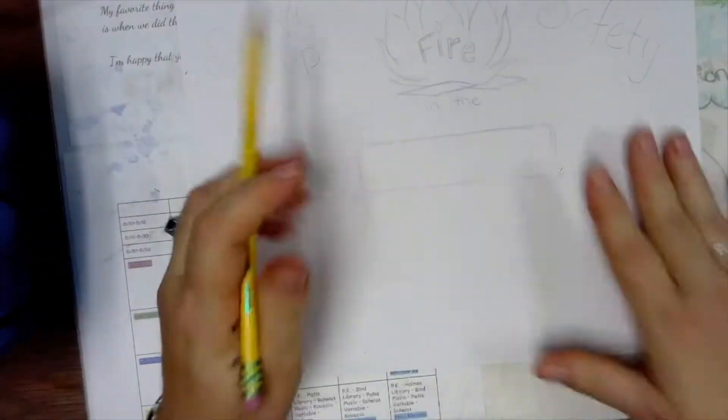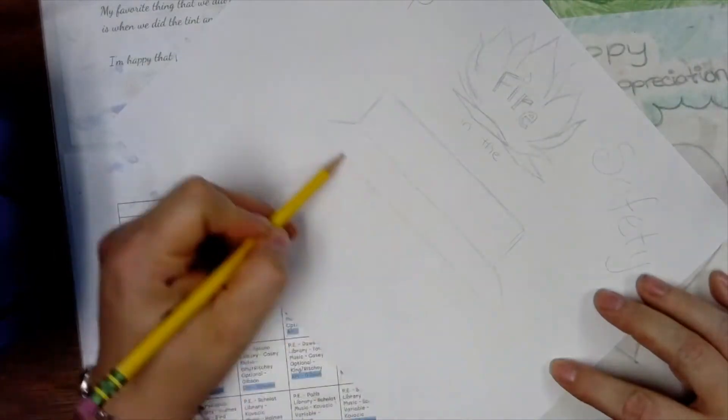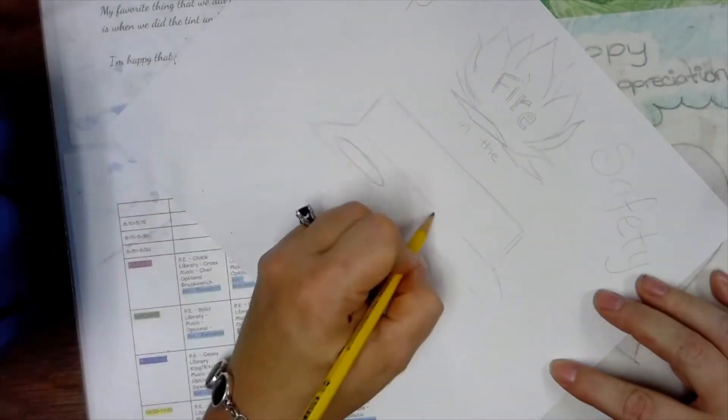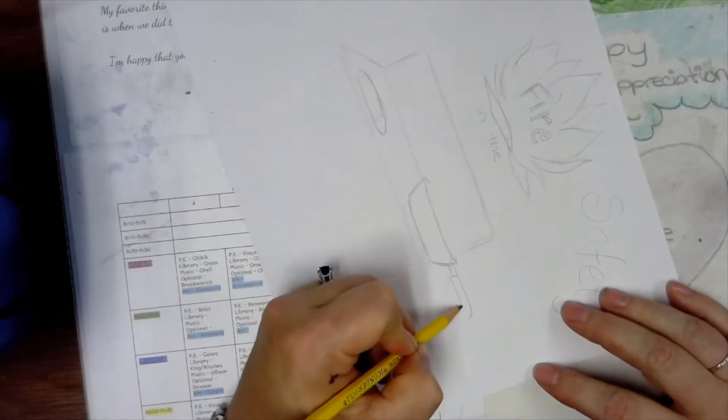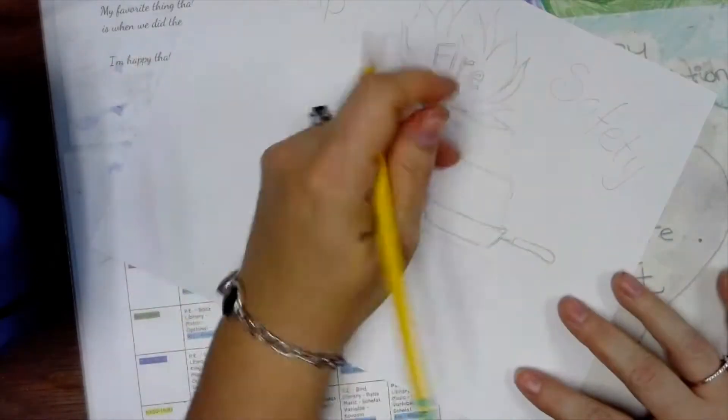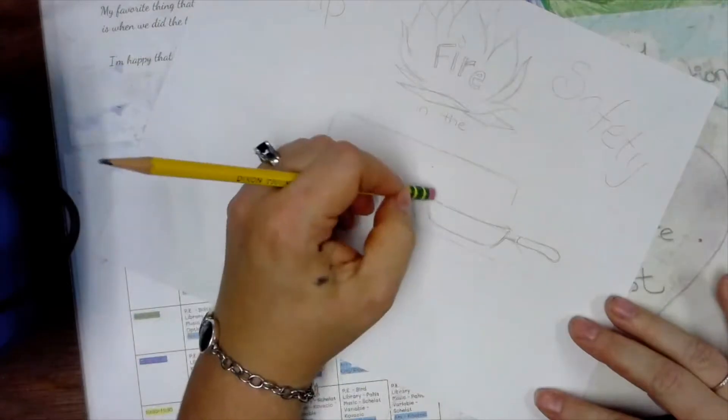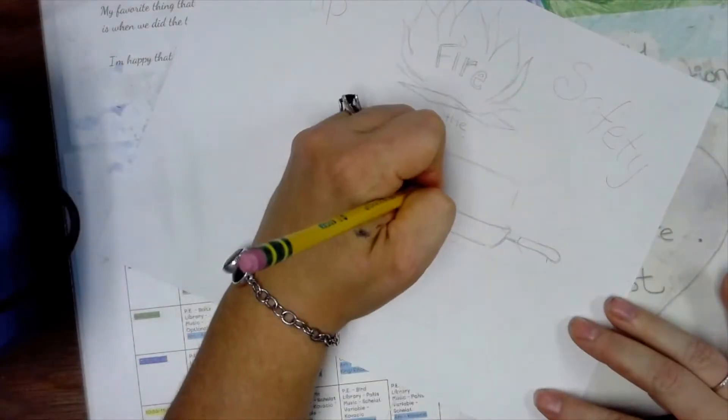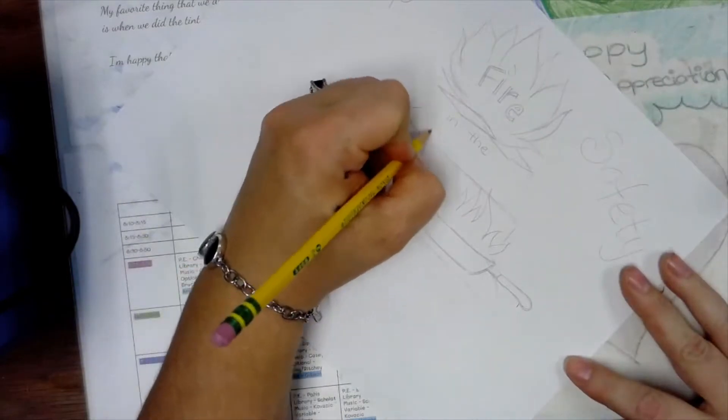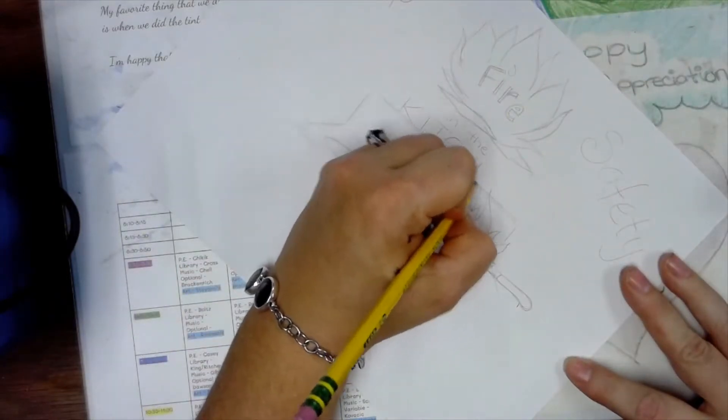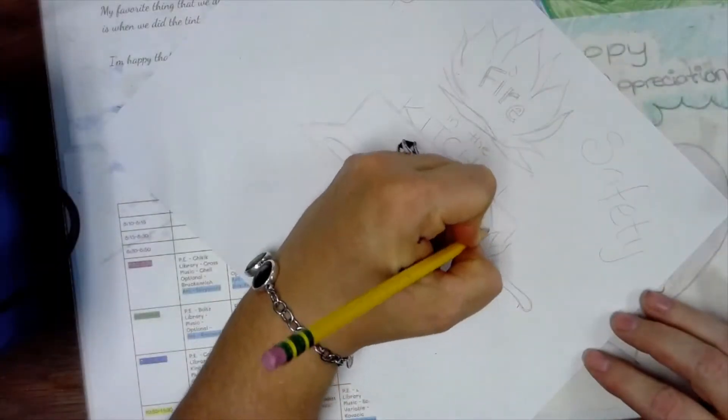I'm going to start by drawing a stove with some sort of pan that has a fire, and you can see where I'm going to take the letters and make them block letters here in a second.